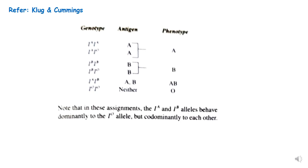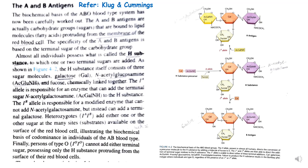The biochemical basis of ABO blood group is due to A and B antigens, which are carbohydrate groups bound to lipid molecules — fatty acids that protrude from the membrane of the RBC. The specificity of the A and B antigens is based on the terminal sugar of the carbohydrate group. Both A and B antigens are carbohydrate moieties that differ depending on their terminal sugar.